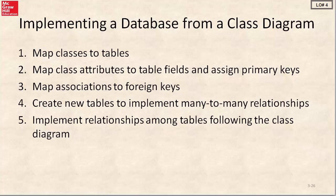Next, we're going to use our data model to create a database. That involves five steps. First, we're going to map classes to tables. Then we're going to map the class attributes to table fields and assign primary keys to those tables. We're going to map the associations to foreign keys. We're going to create any required new tables where we have many-to-many relationships, and we're going to implement relationships among tables following the class diagram.